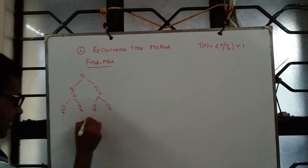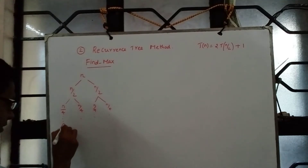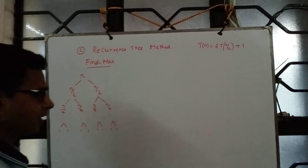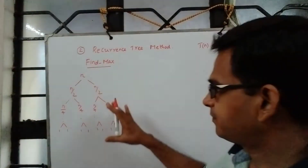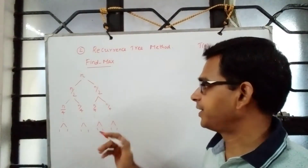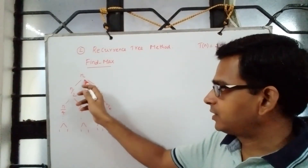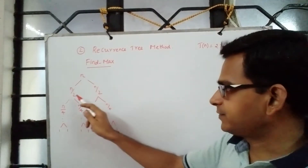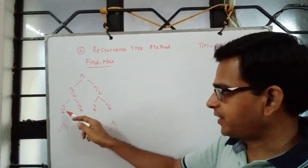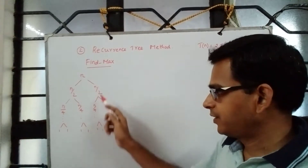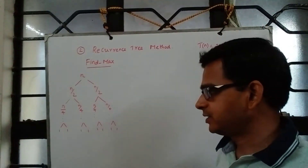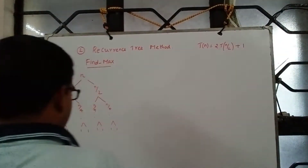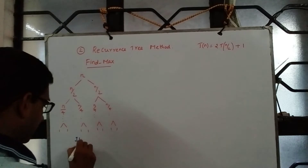We keep doing this until the problem size becomes 1 — that is when we stop our recurrence. This is what we do as part of the input size reduction tree. We start with a problem of size n, create two subproblems each of size n/2, further divide into n/4 and so on, stopping when input size is 1.